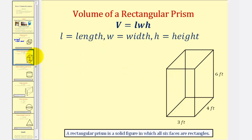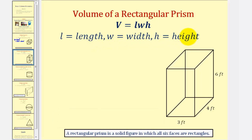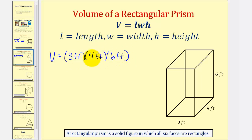Now let's find the volume of a rectangular prism pictured here, where a rectangular prism is a solid figure in which all six faces are rectangles. The volume is equal to L times W times H, where L is the length, W is the width, and H is the height. So the volume will be equal to three feet times four feet times six feet. Three times four is 12, 12 times six is 72, therefore the volume is 72 cubic feet.